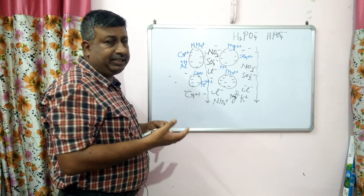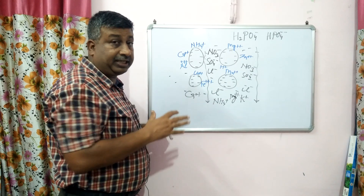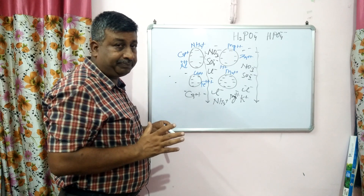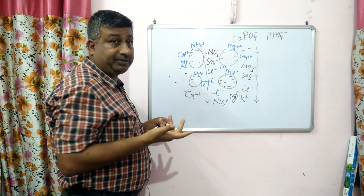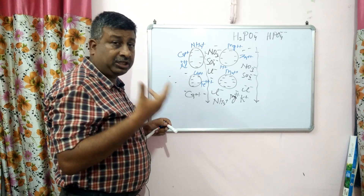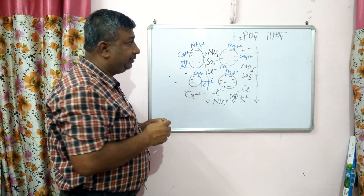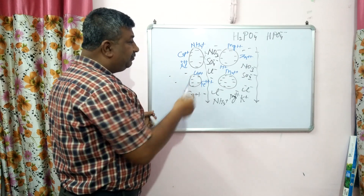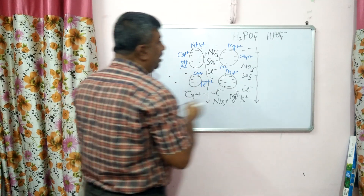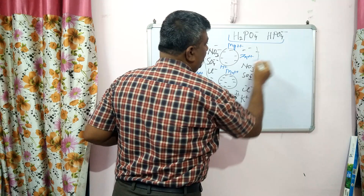So just like nitrate leaching and sulphate leaching, there should be phosphate leaching — but it is not like that. What is the reason that phosphate ions are not leached down? This is very important. The reason is that these phosphate ions are highly reactive.